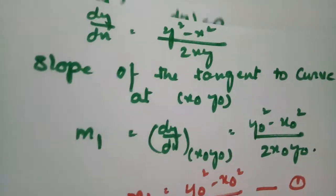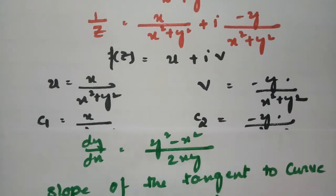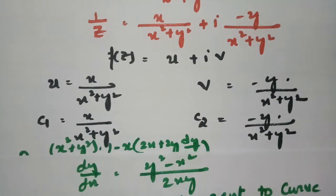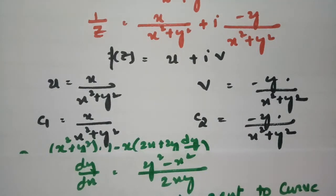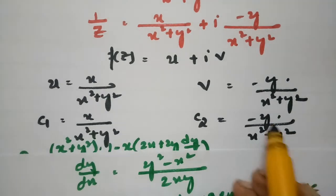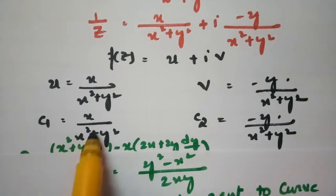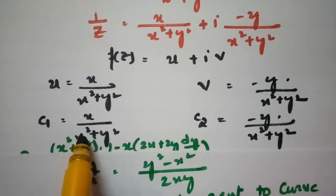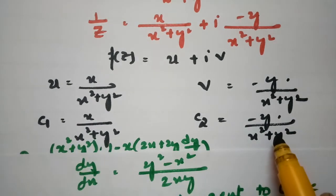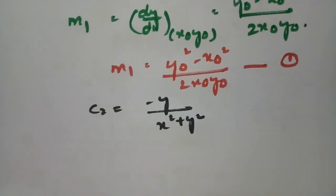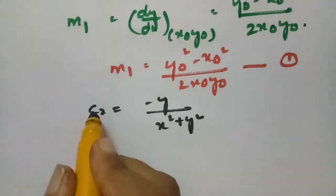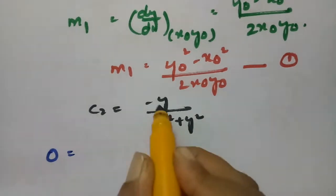Now for the second curve, v = c2, where c2 = -y/(x² + y²). We differentiate this curve with respect to x, where the constant c2 gives 0 on the left side, and we apply the quotient rule on the right.